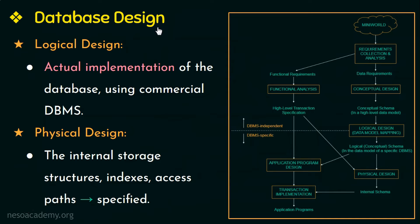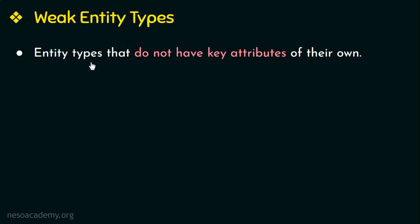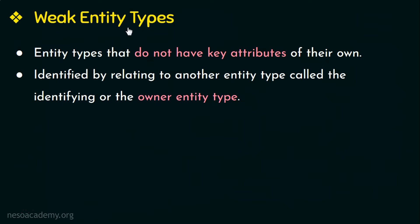Before we see an example of a database application, let us look at weak entity types. Weak entity types are entity types that do not have key attributes of their own. In contrast, entity types that have their own key attributes are called strong entity types. The entities of weak entity types identify themselves by relating to entities of another entity type, called the identifying entity type or the owner entity type.